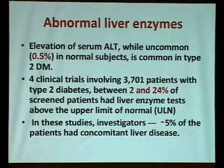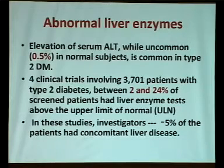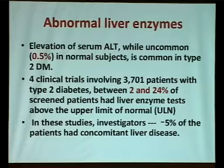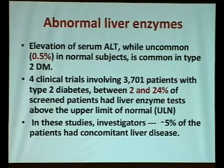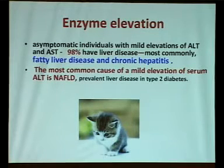Regarding abnormal liver enzymes, most patients are asymptomatic. Asymptomatic AST and ALT elevation occurs in 2 to 24% of diabetic patients, compared to only 0.5% in the non-diabetic group. This was revealed in four clinical trials involving 3,700 patients with type 2 diabetes. Investigators also found that 5% of these patients had concomitant liver disease. The enzyme elevation is mostly due to fatty liver and non-alcoholic fatty liver disease.